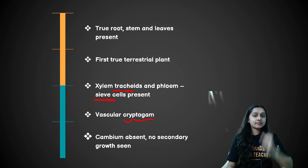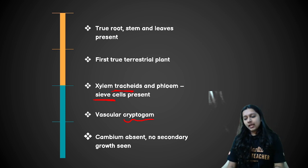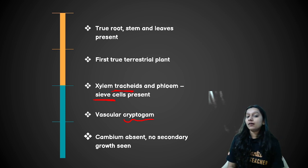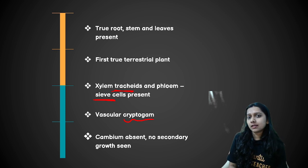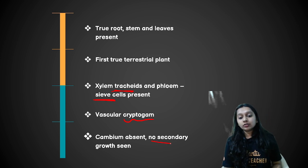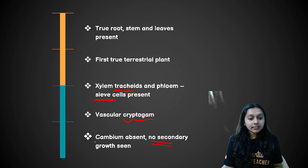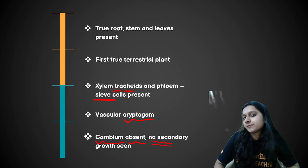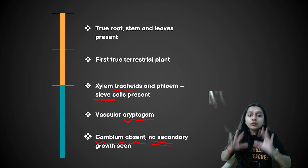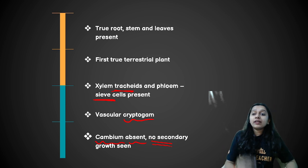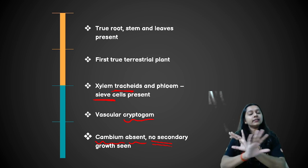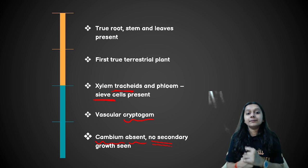However, there is one limitation in Pteridophyta: it is not a tree, meaning secondary growth is not visible. This is because cambium, which is necessary for secondary growth, is absent. Because cambium is absent, Pteridophyta cannot form trees.